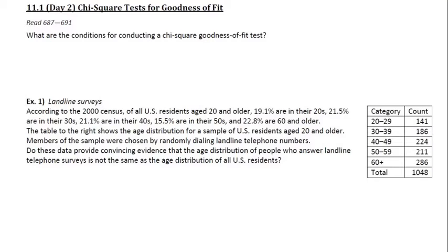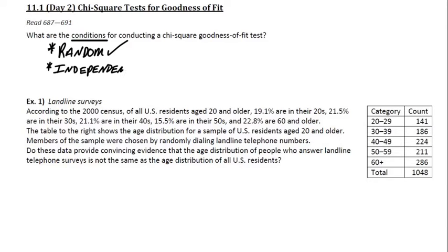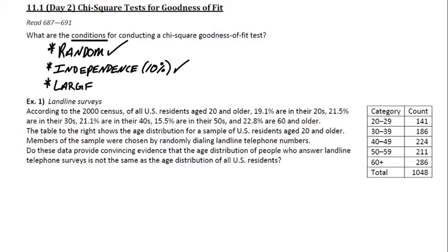We're talking about chi-square tests, and now we're going to continue our conversation about goodness-of-fit tests, which is the exact same type of chi-square test we did on the M&M data. What are the conditions for a chi-square goodness-of-fit test? Well, randomness is still around, and independence is still around, which typically means the 10% condition. The third condition doesn't have anything to do with normality — because these distributions are definitely right-skewed — but we do have one about large counts.